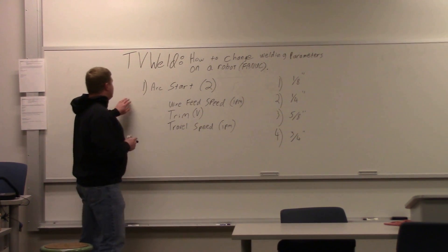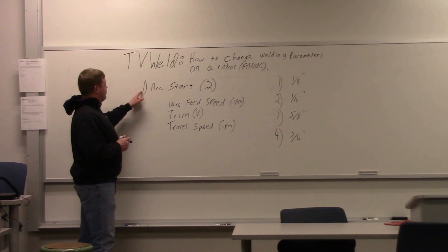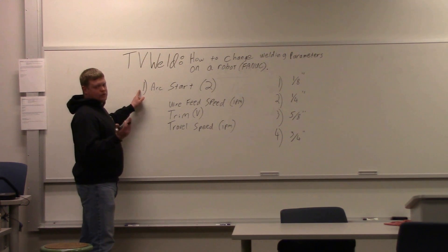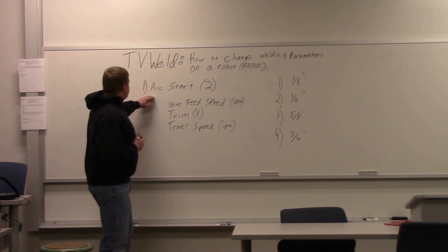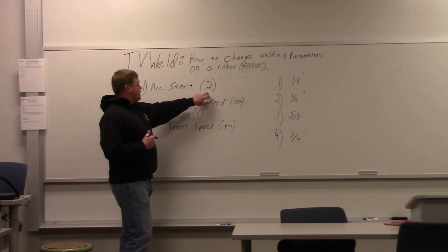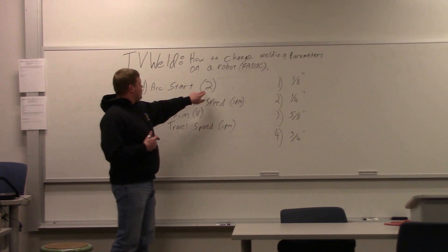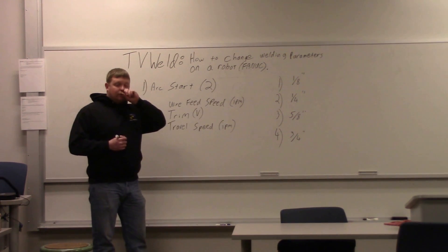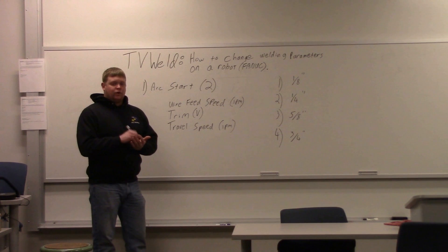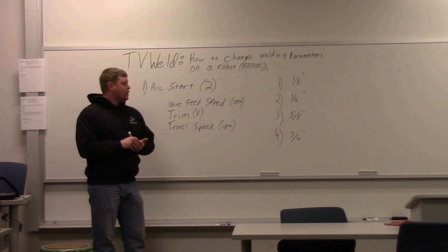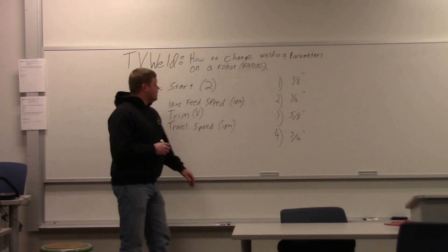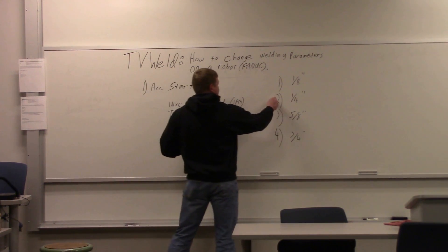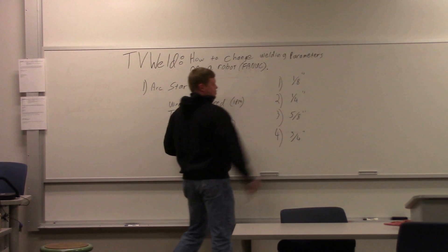When you program it, you're going to have an arc start. There's going to be a number in parentheses after the arc start. That number is what you reference when you go to the data button, because that's where you go to change your parameters. There's going to be one, two, three, four, and so on. So if it says two, those are the parameters you're using.